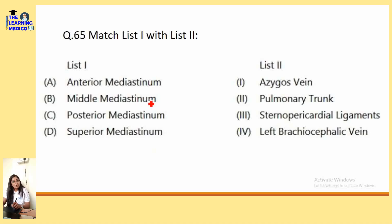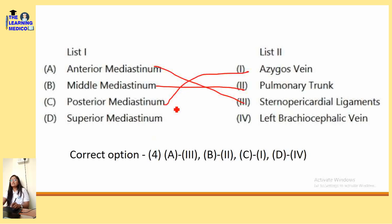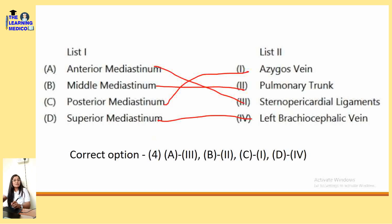Regarding the mediastinum — this question appeared in AIPJT 2023 with unchanged options: Anterior mediastinum contains Sternopericardial ligaments; Middle mediastinum contains the Pulmonary Trunk; Posterior mediastinum contains the Azygous Vein; Superior mediastinum contains the Left Brachiocephalic Vein. This could be asked again in AIPJT 2024.